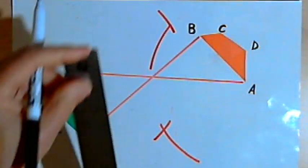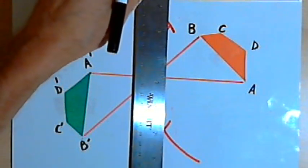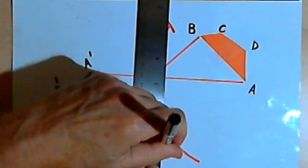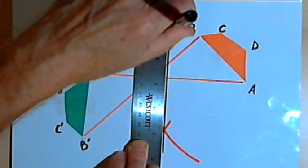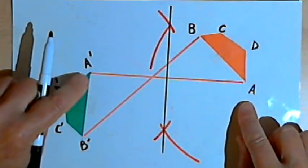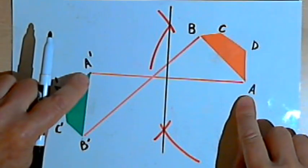And I'll switch to a black marker so we can see what I've got. I'm going to connect those points of intersection, and the line that I get is a perpendicular bisector for line segment A, A-prime.